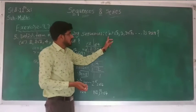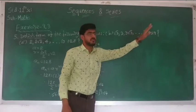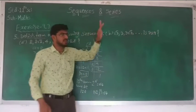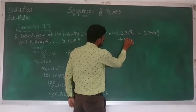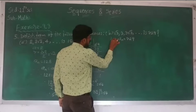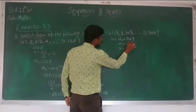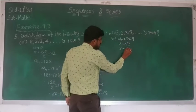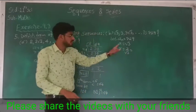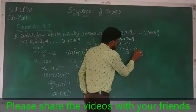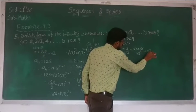Now see part (b): √3, 3, 3√3... up to is 729. Same as above, we suppose the nth term will be 729, so a_n is equal to 729. Find out the first term and common ratio from the given GP. First term is √3, it is very clear. Common ratio is given by second term upon first term, so we get 3 upon √3, which equals √3 into √3 upon √3, so √3 cancels and we get √3.